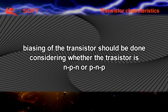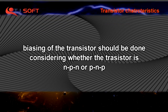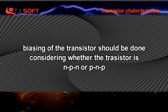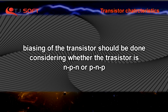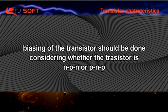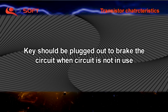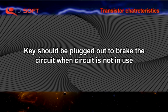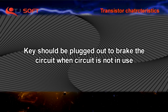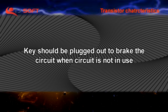Precautions: Biasing of the transistor should be done considering whether the transistor is NPN or PNP. The key should be plugged out to break the circuit when the circuit is not in use.